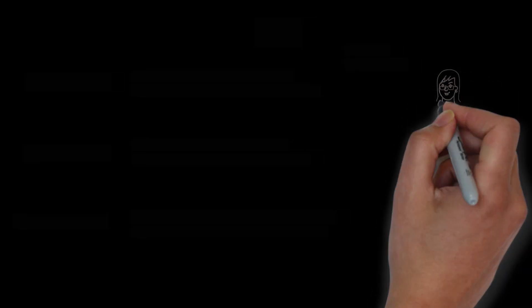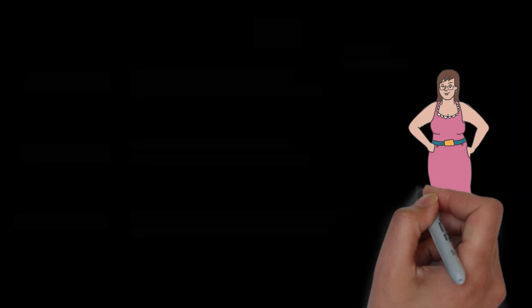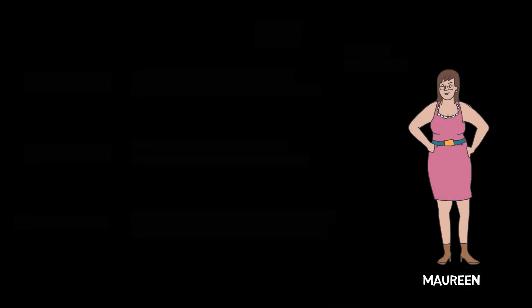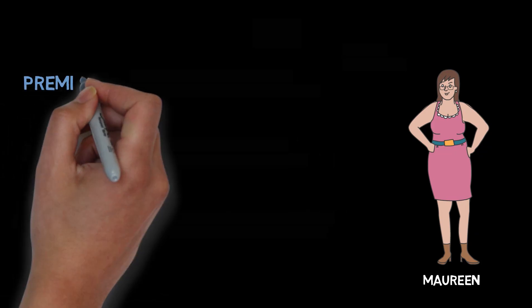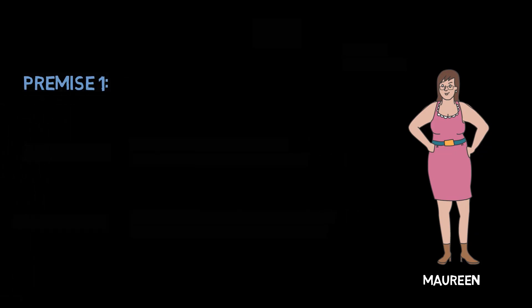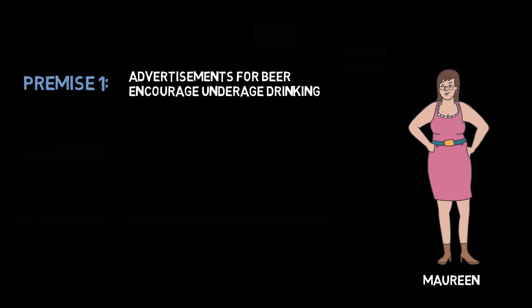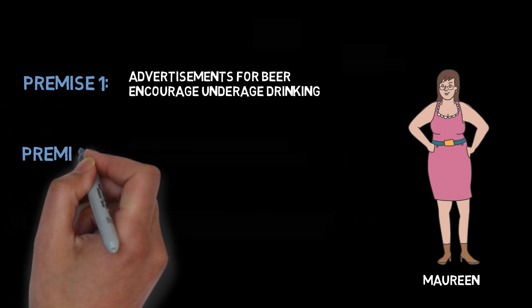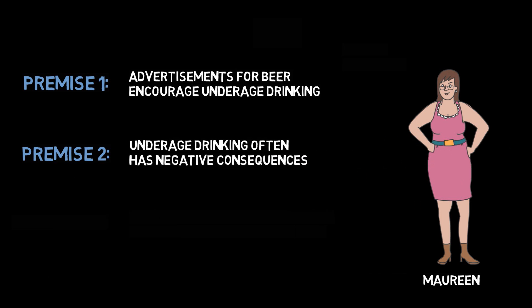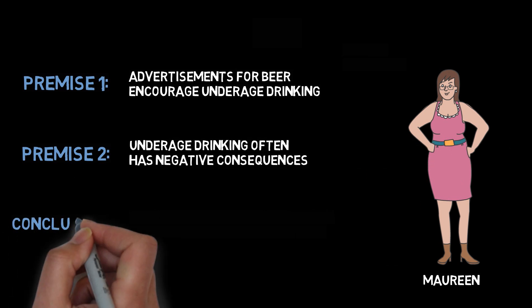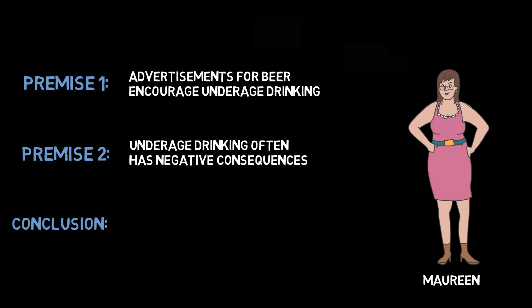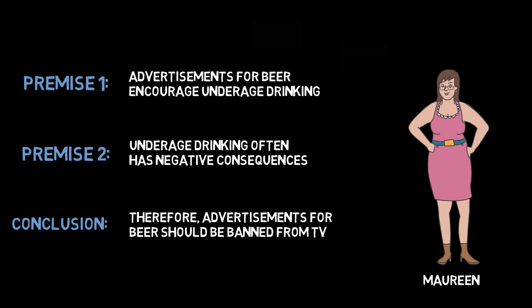Suppose my friend Maureen presents the following argument. Premise 1: Advertisements for beer encourage underage drinking. Premise 2: Underage drinking often has negative consequences. Conclusion: Therefore, advertisements for beer should be banned from TV.